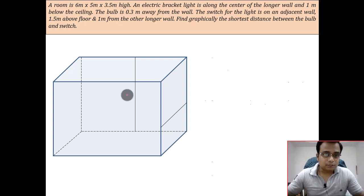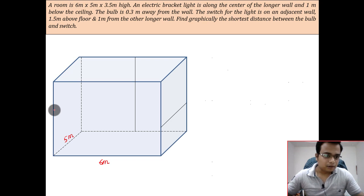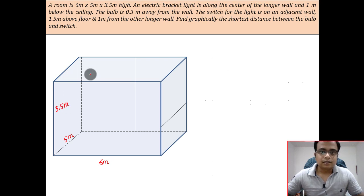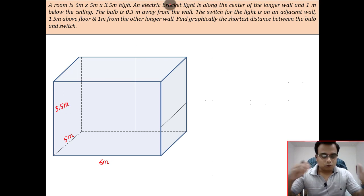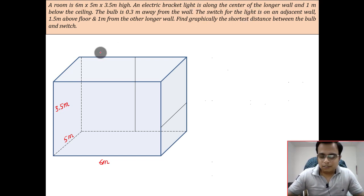What we have here is a room. The dimensions have been given: this block can be assumed as a room 6 by 5 by 3.5 meters. So this is 6 meters, the breadth is 5 meters, and the height is 3.5 meters. There is an electric bracket onto which we need to fit a bulb.